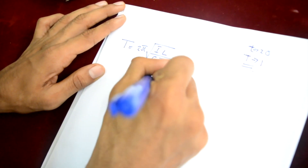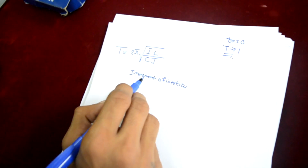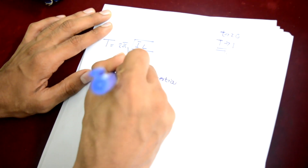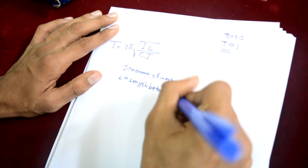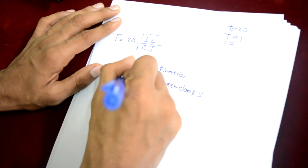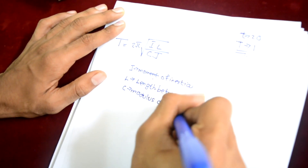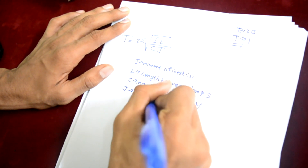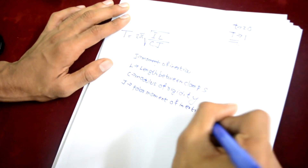That is the real time period. Here I is the moment of inertia. Initially the moment of inertia is that of the torsion disk alone, and then we get the moment of inertia for the torsion disk plus the ring system. Here L is the length between the clamps. C is the modulus of rigidity, and J is the polar moment of inertia of the wire.